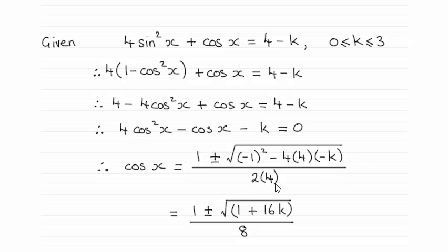And it's all divided by 2a. And when you clean this up, you end up with the values for cosine x: 1 plus or minus the root of 1 plus 16k, and it's all divided by 8.